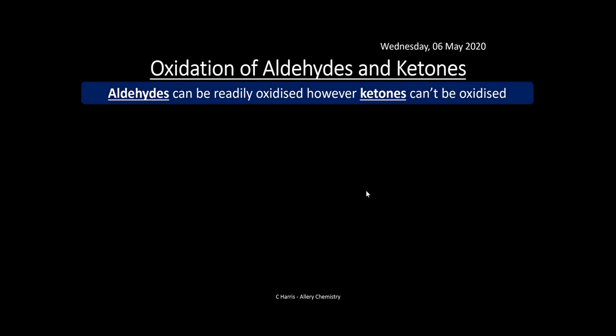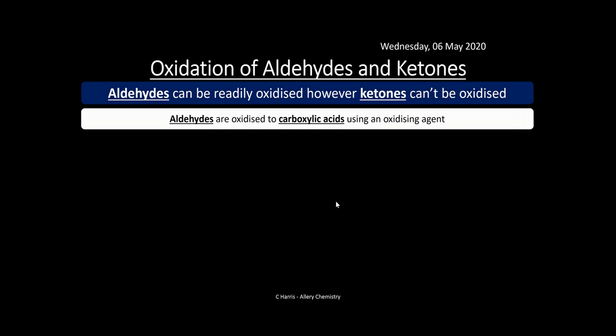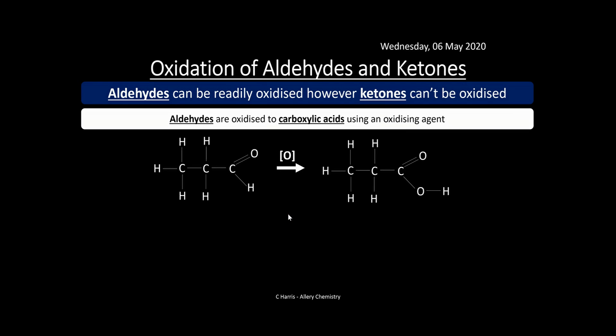Aldehydes can be readily oxidised, however ketones cannot be oxidised. Aldehydes are oxidised to carboxylic acids using an oxidising agent. Here's an aldehyde being oxidised — we use the oxidation symbol [O] in square brackets to represent the oxidising agent, and we form the carboxylic acid at the end.